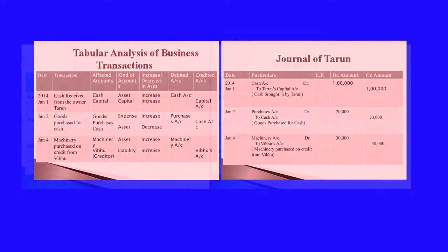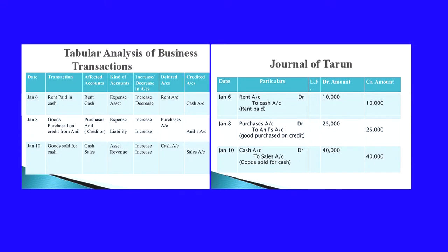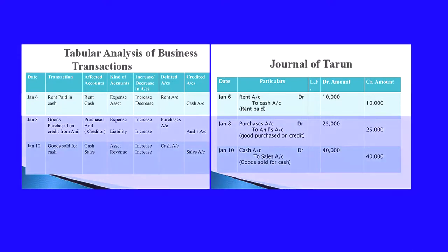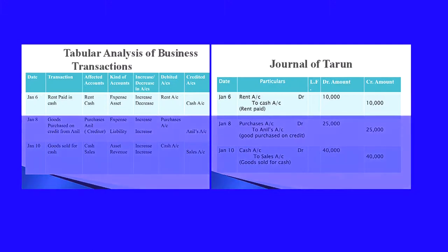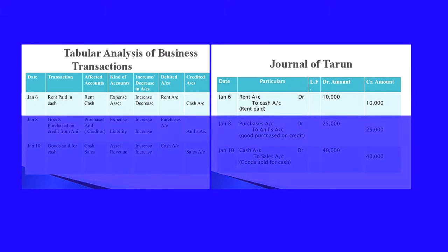Coming to the next transaction, January 6th: rent paid in cash. Rent and cash are the two affected accounts. Rent comes under expense, and cash comes under asset. Rent paid means expenses are increasing; cash is going from the business so cash is decreasing. Rent being an expense is increasing, so rent account is debited. Cash is decreasing — when asset account decreases, cash is credited. So rent account will be debited and cash account will be credited.